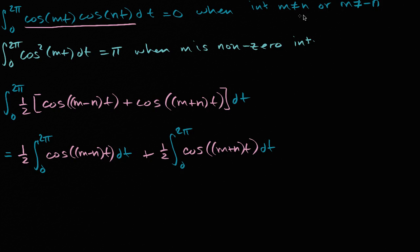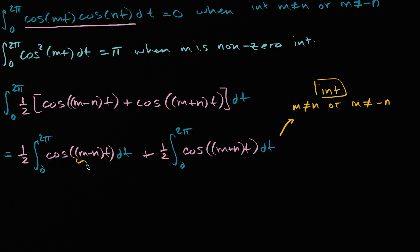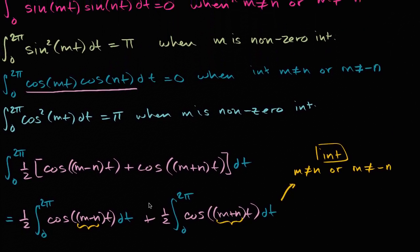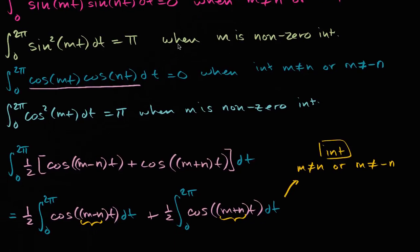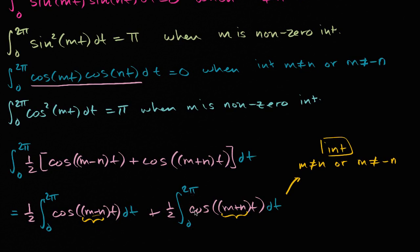When m and n are integers that don't equal each other and don't equal their negatives — m not equaling n, or m not equaling negative n — this right over here is going to be a non-zero integer, and this right over here is going to be a non-zero integer. We've already established that if you have a non-zero coefficient, the definite integral from zero to two pi of cosine of some non-zero integer times t dt is equal to zero. So both of these integrals are going to be zero, and one-half times zero is zero — it's all going to end up being zero.